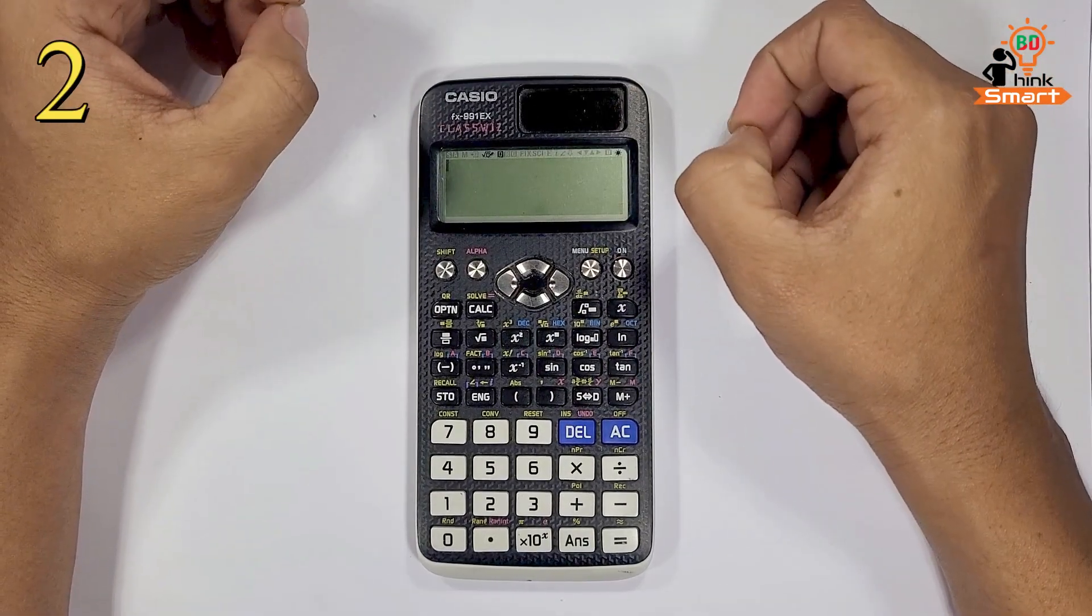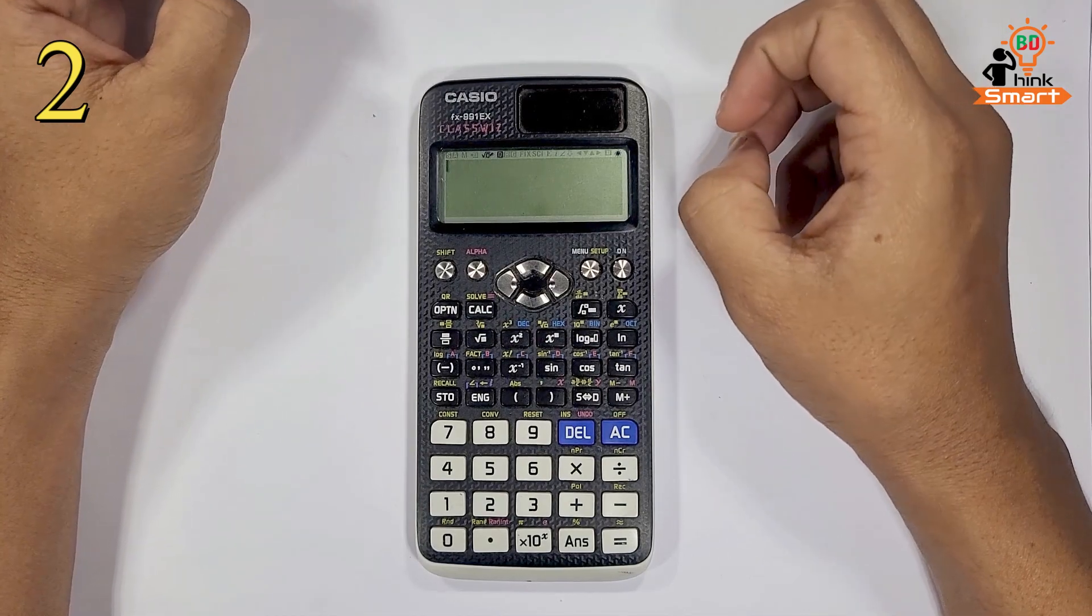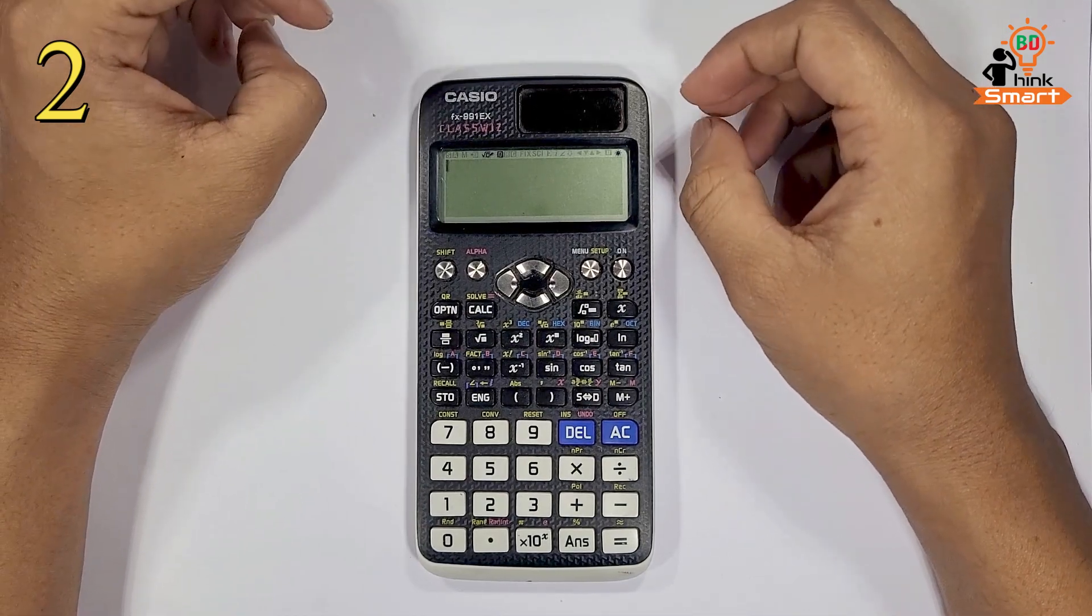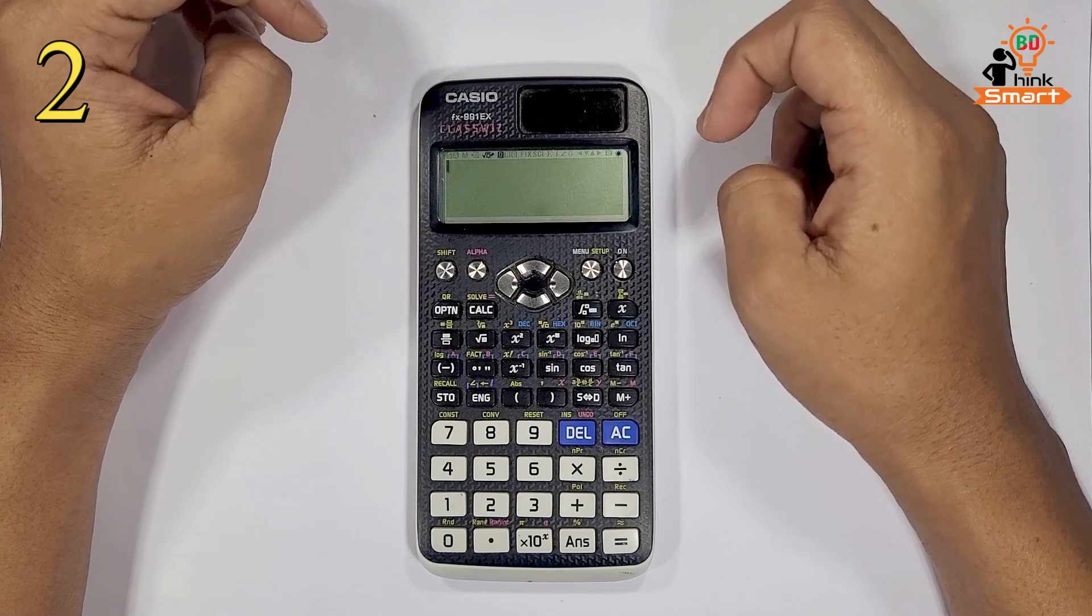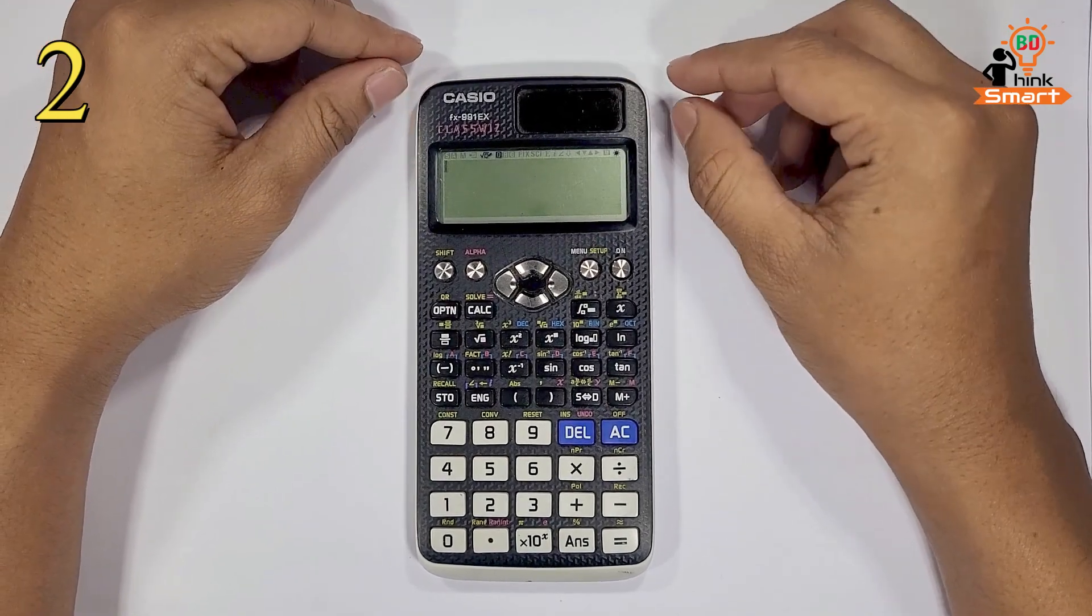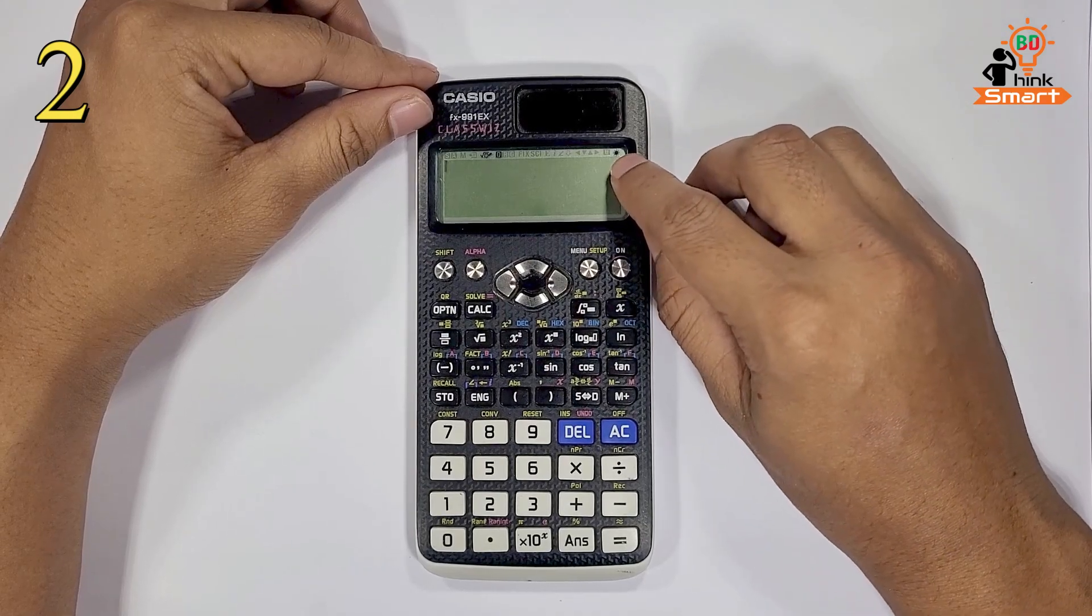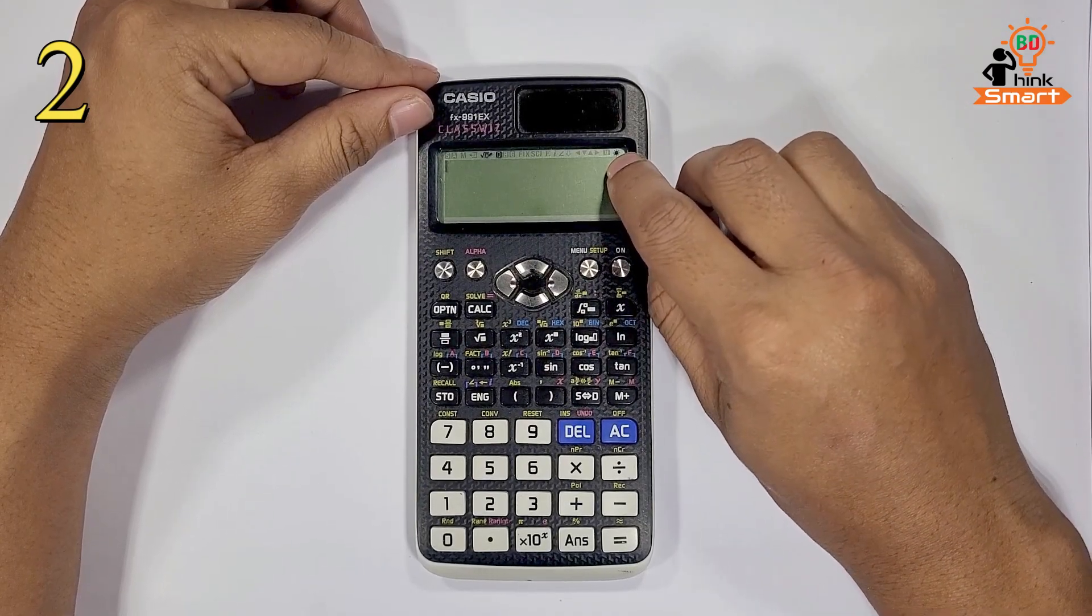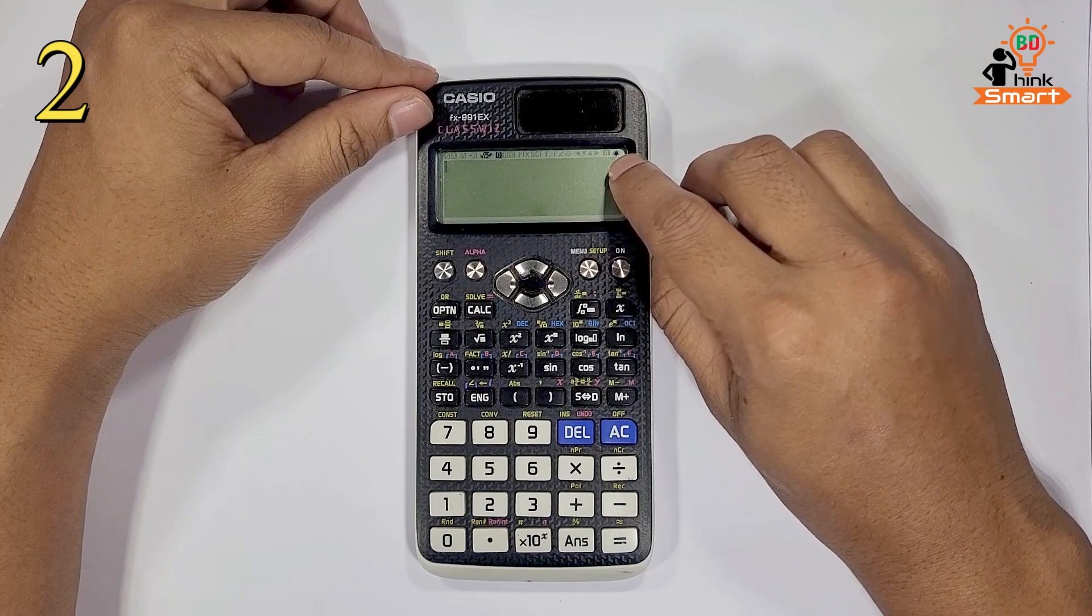Now we will see the second way. Replica or duplicate products do not have the solar panel installed on it. We will see if the solar panel is working or not. Here we can see light falling on the solar panel and indicator. The solar panel indicator icon is showing there. The light is glowing.